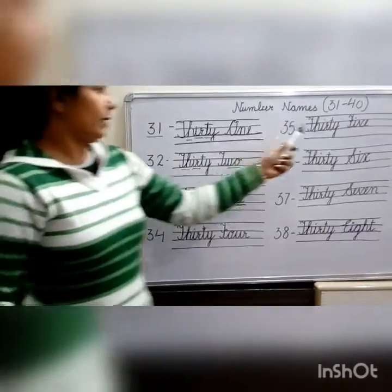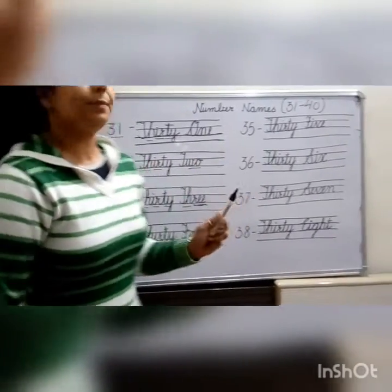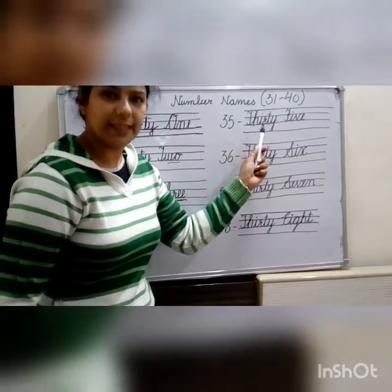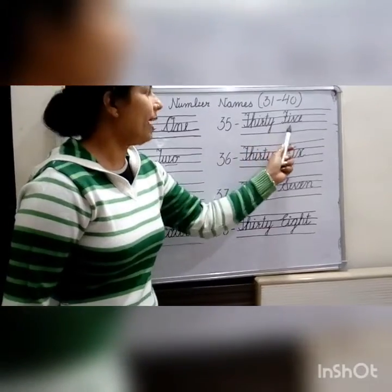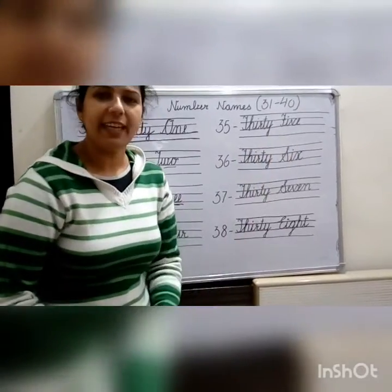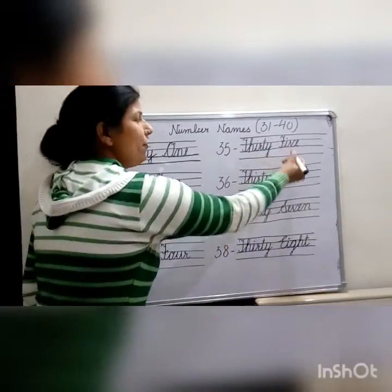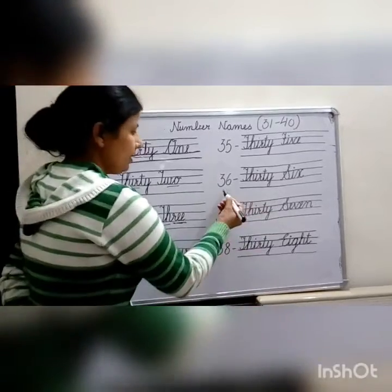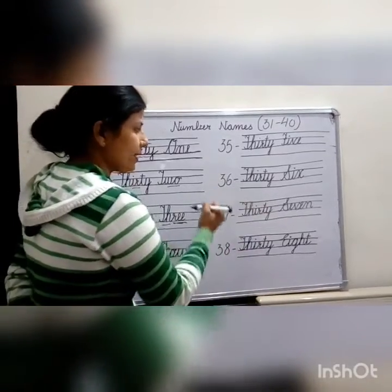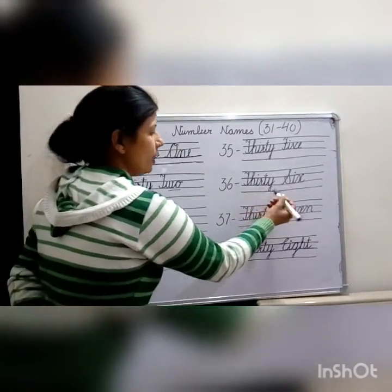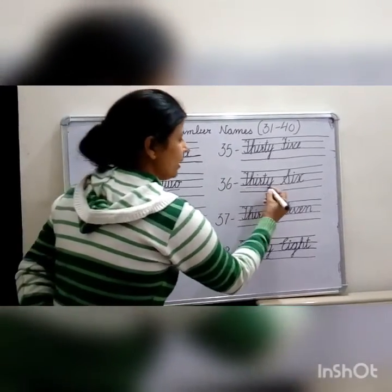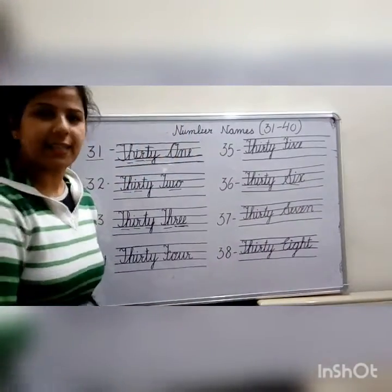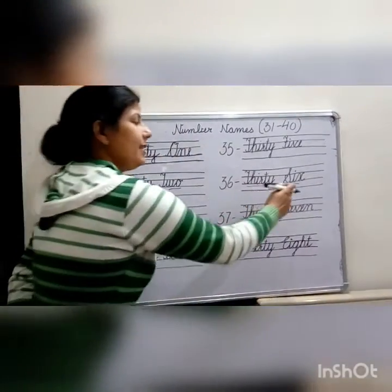Now look here. 35. Thirty. F-I-V-E — 5. Thirty-five. Next, 36. Thirty. S-I-X — 6. Thirty-six.